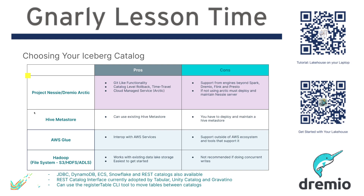There is Project Nessie, which is an open source project that is built to be an iceberg catalog. It's existed a little bit longer than the iceberg REST interface, which is why it doesn't currently implement that. But essentially what it does is expose its own open API spec that allows you to interact with a service that tracks commits at the catalog level.